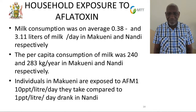Household exposure also came from milk. Makweni consumed about 0.3 liters per household, whereas Nandi consumed about 3.1 liters per household — Nandi being a major milk-producing region of Kenya. The exposure from milk in Makweni was about 10 parts per trillion per liter, while in Nandi it was about 1 PPT per liter, reflecting lower contamination in animal feeds in Nandi since animals were fed the same less-contaminated maize from those areas.